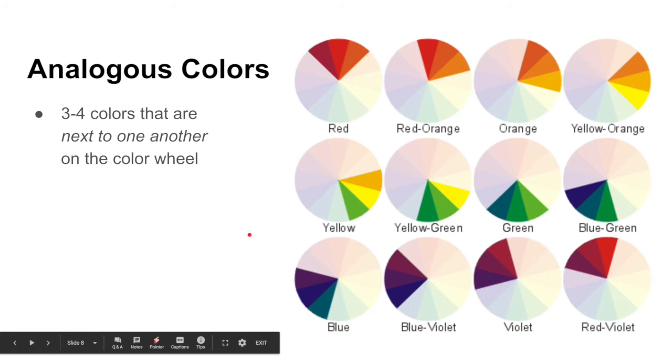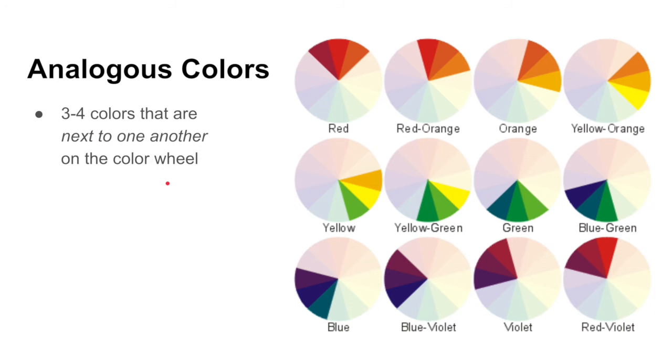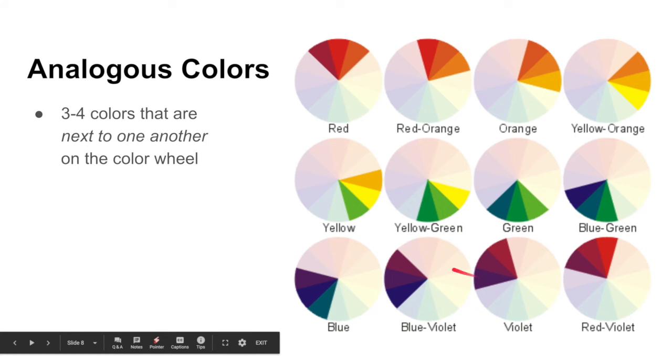Our next color scheme is analogous. And analogous colors are three to four colors that are next to one another on the color wheel. So any colors that are really similar are going to be next to each other. So analogous would be just kind of a small range of colors with just a little bit of variation. So we might have red-violet, red, red-orange, or we might do yellow, yellow-green, and green. So just any colors that are close to one another in hue.